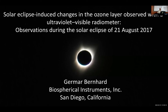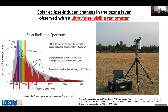My talk today is called 'Solar Eclipse Induced Changes in the Ozone Layer Observed with the Ultraviolet Visible Radiometer.' The picture here is from the last eclipse in 2017 when we had nice blue skies without any clouds — a little bit better than what we had two days ago. The title has three elements: the changes introduced by a solar eclipse, the ozone layer, and the observations with the radiometer.